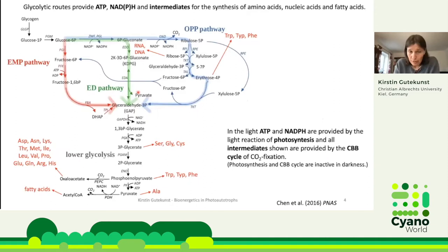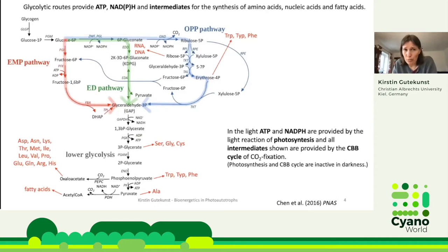There are three different glycolytic routes in cyanobacteria and also in plants, starting with glucose. First, the EMP pathway, shown in red here, also often called glycolysis. Then in blue, the oxidative pentose phosphate pathway. And the third route, which has only been known for about four or five years to also be present in plants and cyanobacteria — the ED pathway.